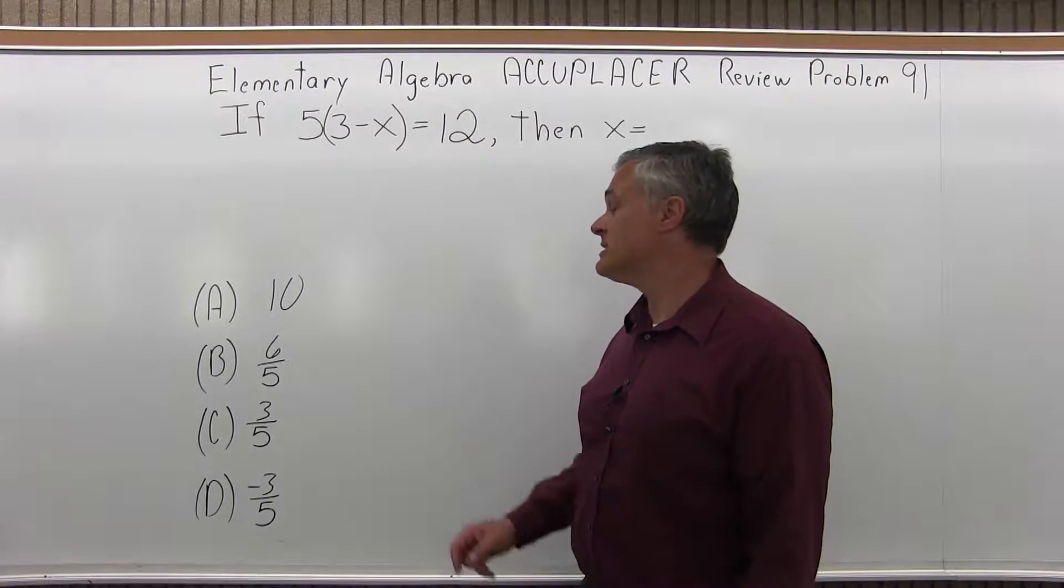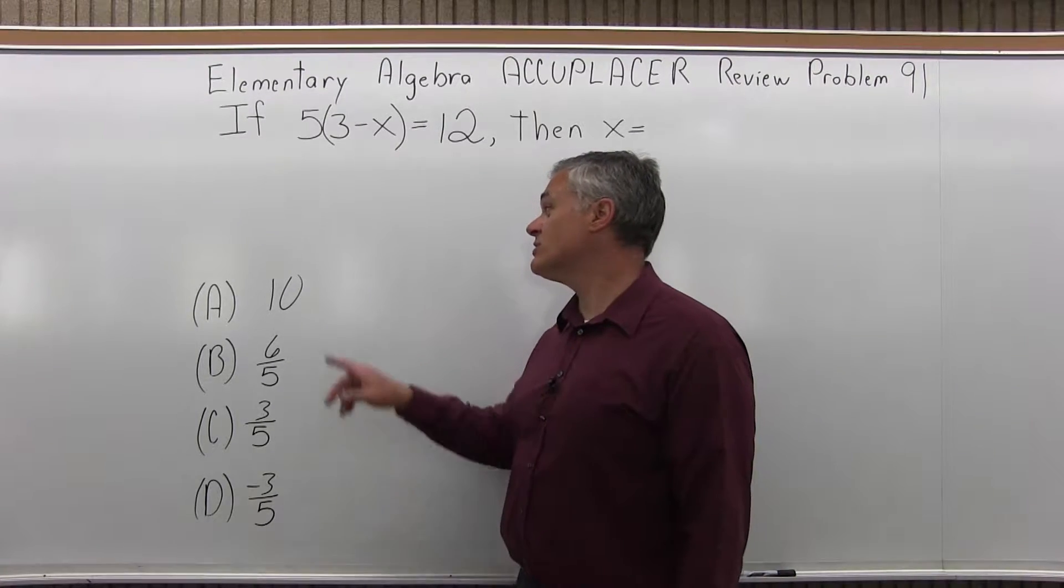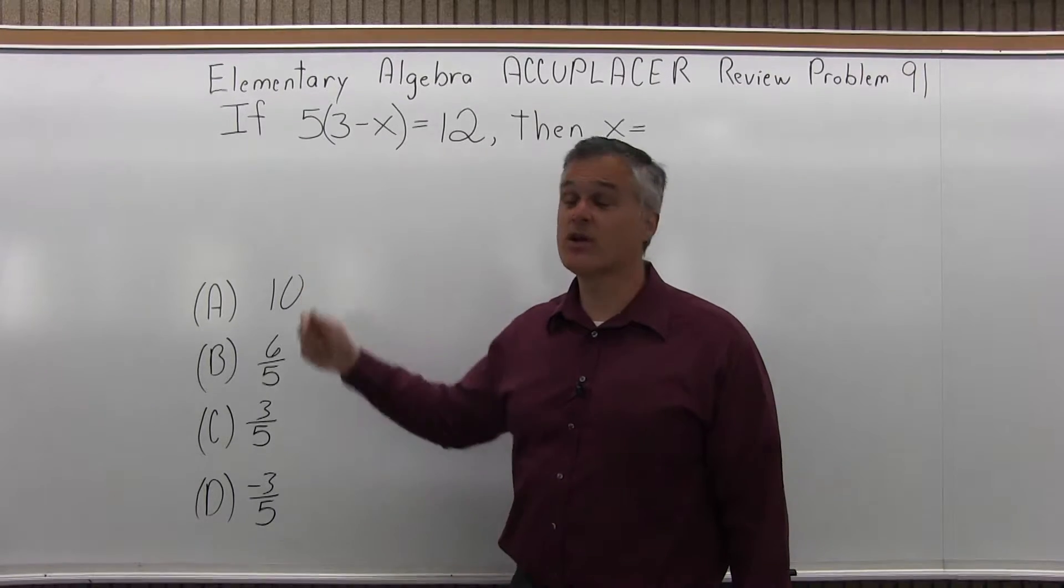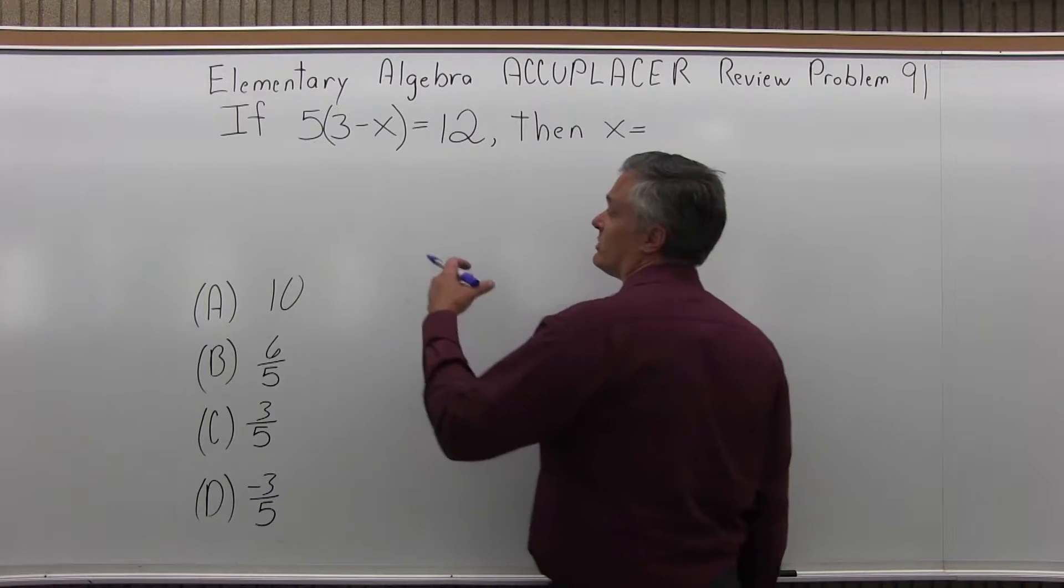And you have 4 options, and if you really don't know how to solve the equation, you could just start plugging the 4 options in for x and see when you would get 12 equals 12, and that'll work. But the better way is to really solve it using algebra.